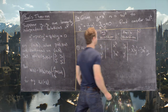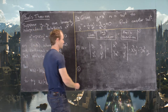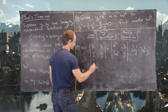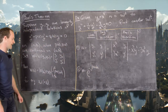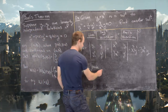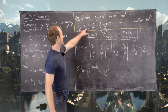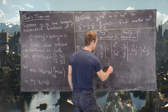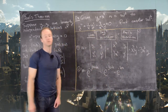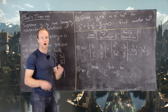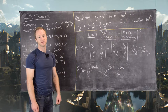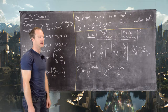Let's say Abel's Wronskian equals e to the negative antiderivative of p of x dx. Since p of x in this case is 1/x, we get e to the minus natural log of x plus a constant. We won't worry about the constant because it can be absorbed into the initial value of the Wronskian and into the function y2. Since this is a homogeneous differential equation, any multiple of a solution is also a solution.